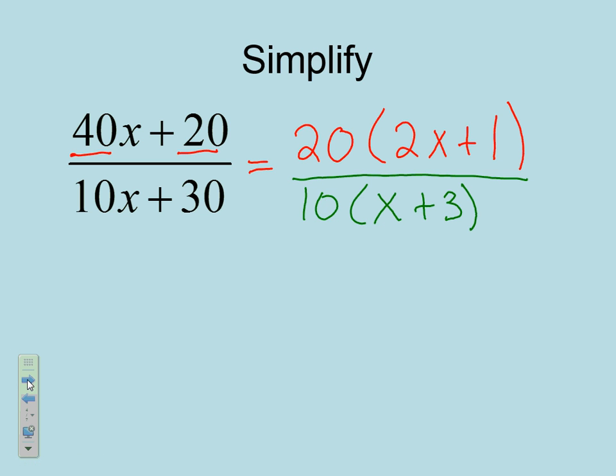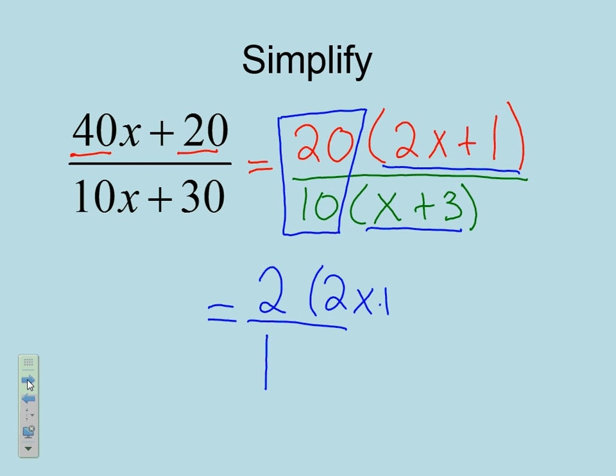Whenever I simplify, the first thing I need to do is look at my numbers out in front. So, 20 over 10. I can simplify this. 10 goes into both. So, on the top here, I'm going to get 2. On the bottom, I'm going to get 1. Now, you don't have to put the 1 there if you don't want to. If we look here, these would have to be the same to cancel. Since they're not the same, we're going to keep both of them. So, this is going to be 2x plus 1. And, on the bottom, I'm going to have x plus 3.